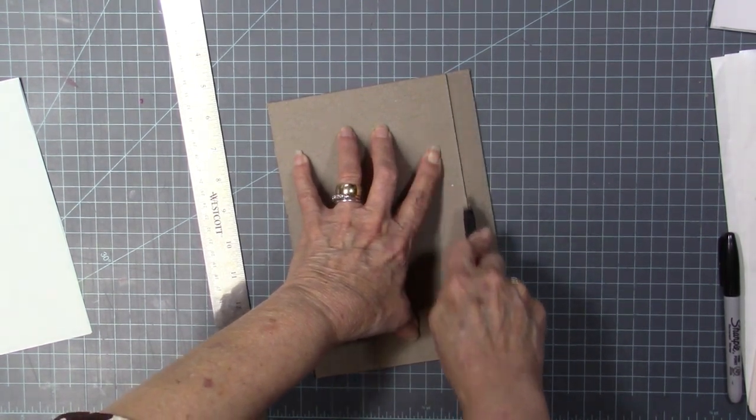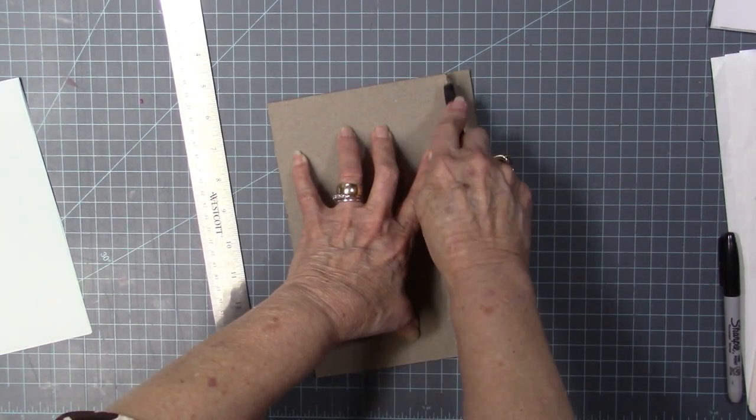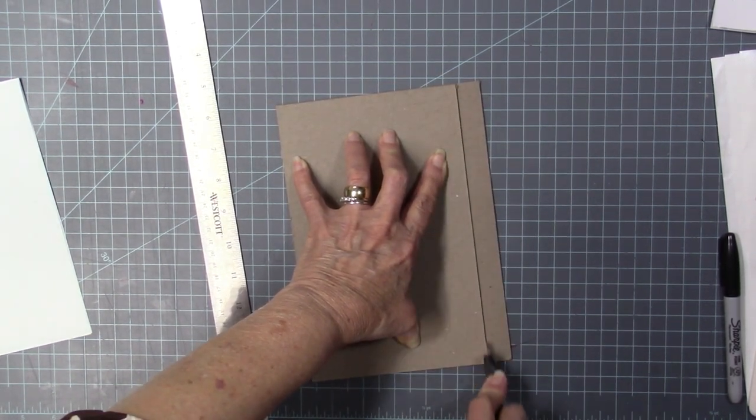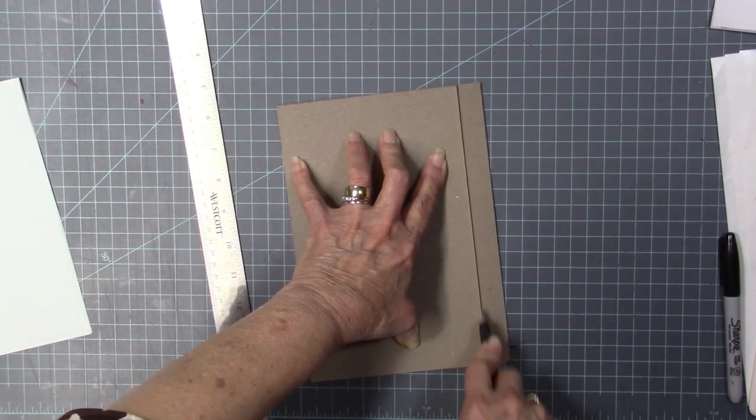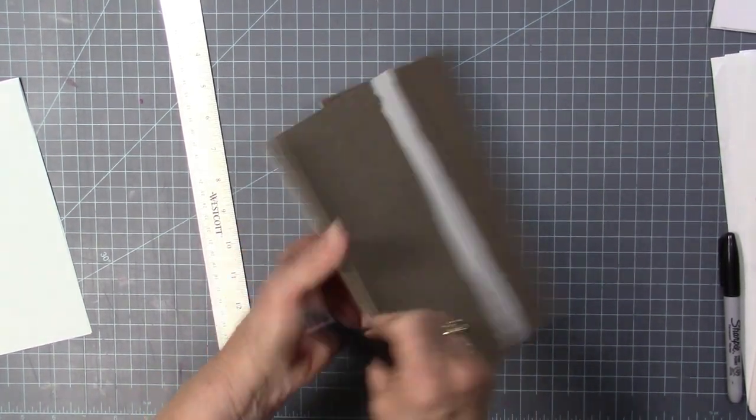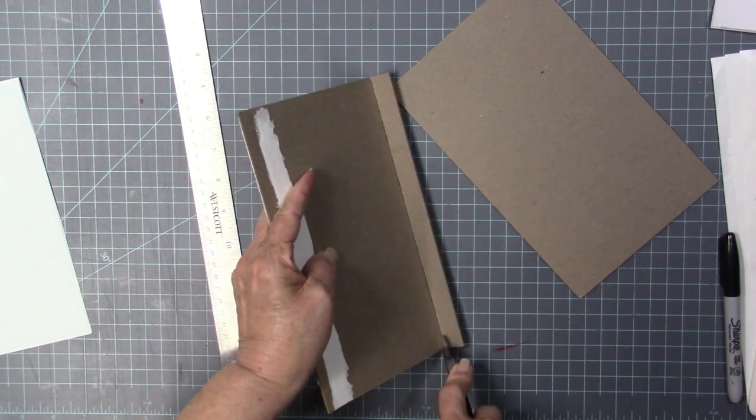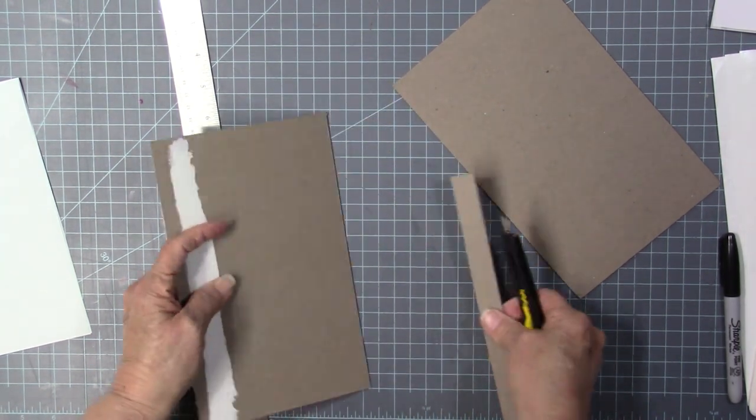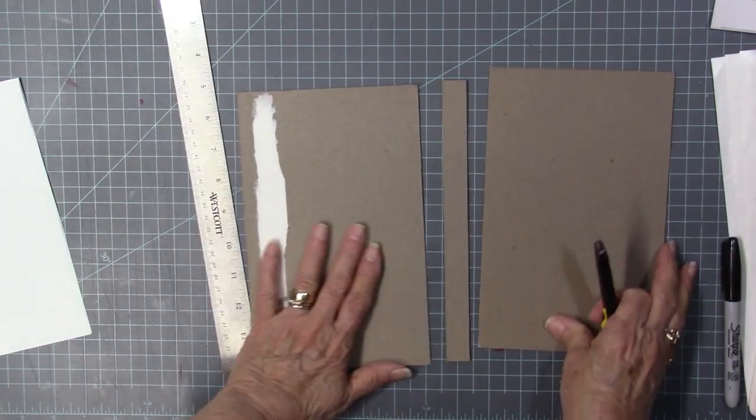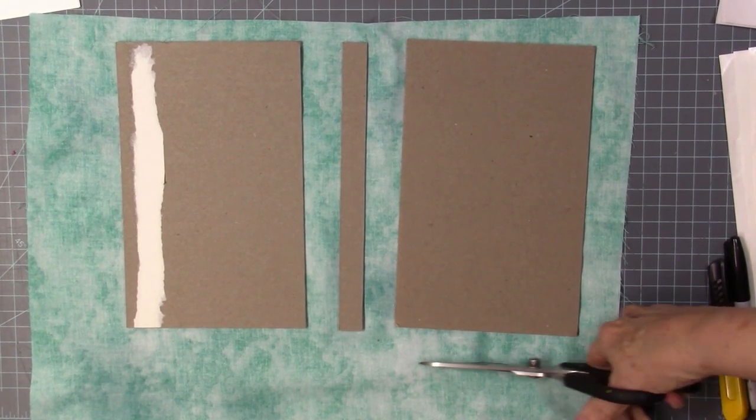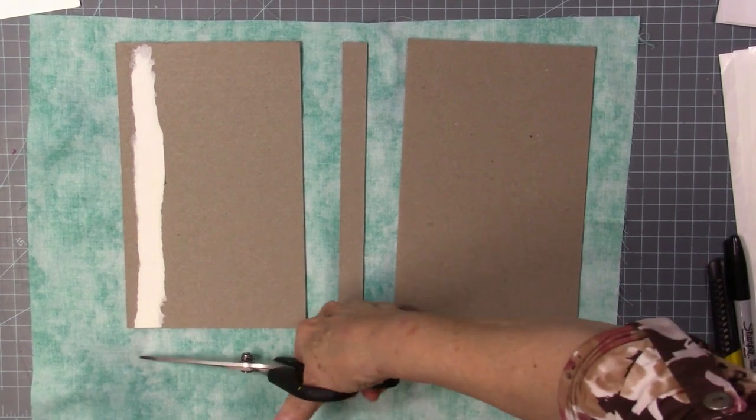Now this is really important. I've done a bunch of junk journals, but this is my first time to do a case binding. And so that little spine piece needs to be exactly the same width as your signatures when they're all stitched together and finished up. That's in part one, the beginner's bookbinding video. Actually, I'm kind of sort of a beginner too, but I always like to take y'all along on my journey as I learn.